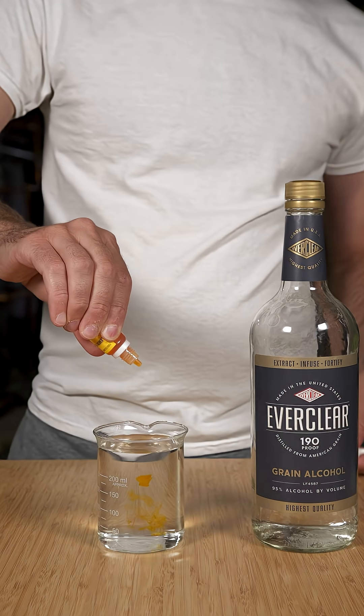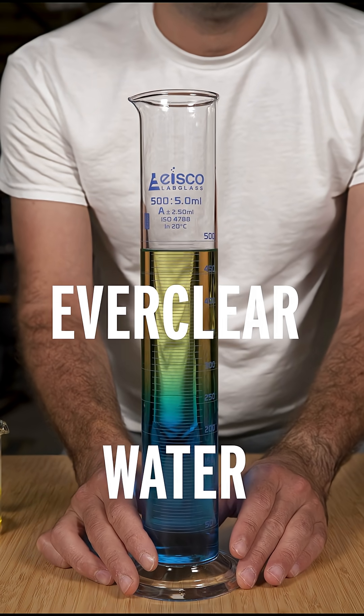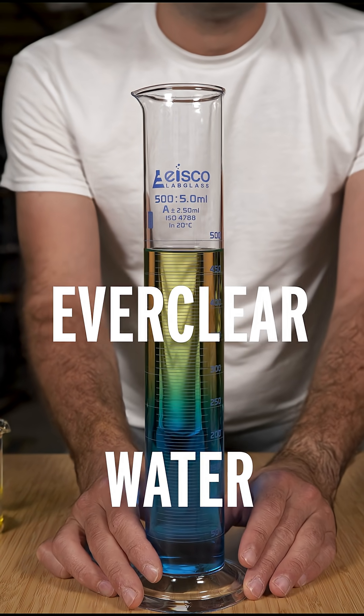I'm going to show you how 250 plus 250 can equal 485. This is 250 milliliters of Everclear sitting on top of 250 milliliters of water.